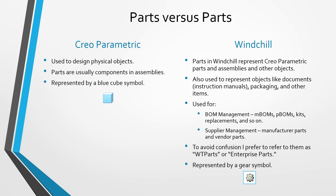Besides that, parts in Windchill are used to manage other different objects — for example, things like documents. Maybe you want to represent an instruction manual or a warranty card in your product, or maybe your packaging — the peanuts you use to pack something and the box that contains it. Basically, anything that your enterprise wants to manage can be represented as Windchill parts, and some of the different uses are BOM management and supplier management.